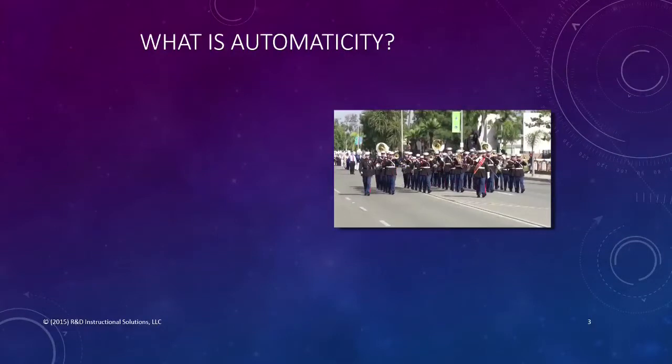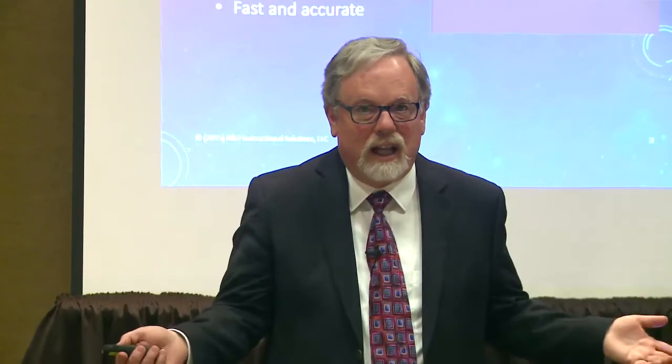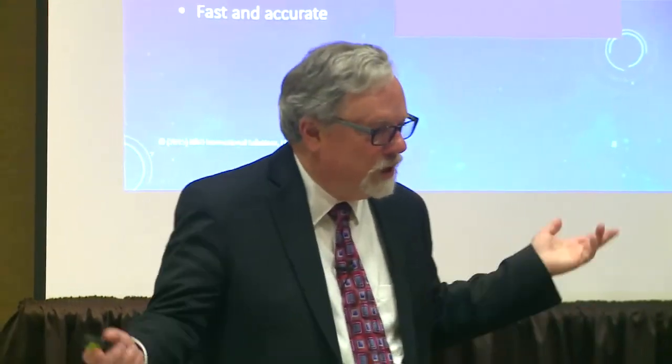So what exactly do we mean by automaticity? Automaticity is the goal of Rocket Math, and it is the third level of learning. The first level of learning is accuracy — when you first learn something you can do it correctly, but slowly and with a lot of concentration. I can remember being accurate at trumpet pieces when I was in band in elementary school. I could play every note in order without making mistakes, but it was pretty slow because I really had to think about it. I had learned it to accuracy. But then the band director is conducting and I'm supposed to keep up — I couldn't do that. I needed more practice to develop fluency.